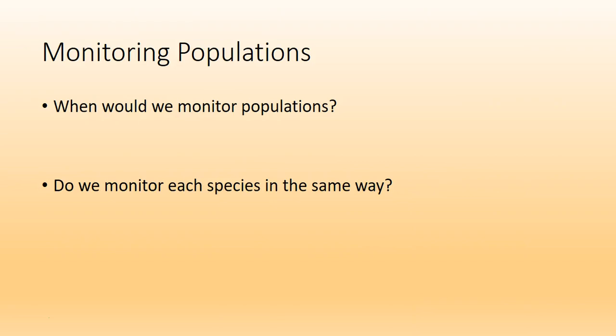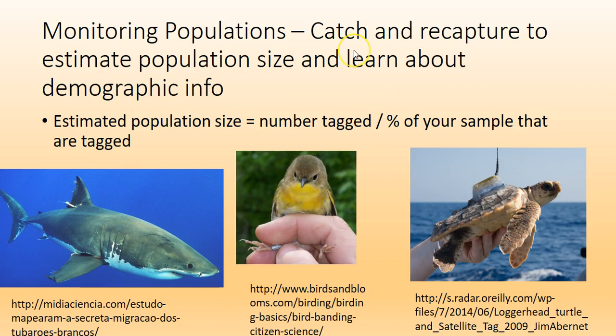Now let's look at monitoring populations. Anytime we're concerned about numbers or doing conservation efforts, we need to know where we're at — that's adaptive management: constantly assessing whether what you're doing is working, and if not, changing something. Monitoring is very species dependent. One common method is catch and recapture to estimate population size and learn about demographic info — male, female, age, etc. Examples include shark tags, bird banding, and radio collars on loggerhead turtles.